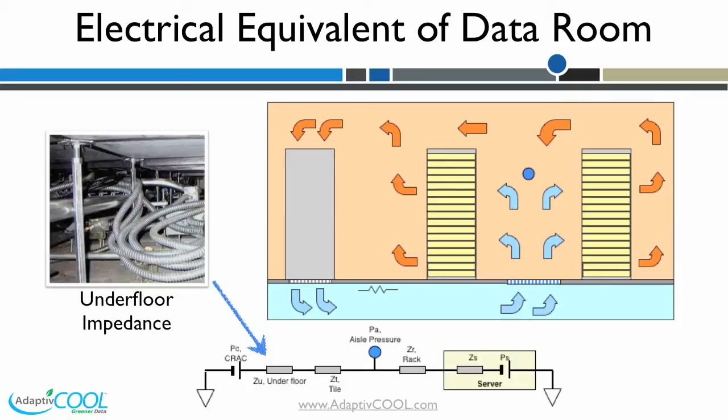The underfloor impedance between CRAC and the rack determines the amount of air flow that is discharged from the floor at the rack. Therefore, the underfloor impedance plays a significant role in air flow availability and rack temperatures at different locations in the data center.